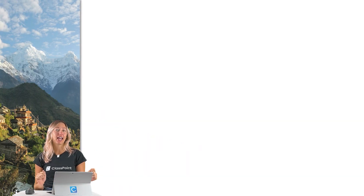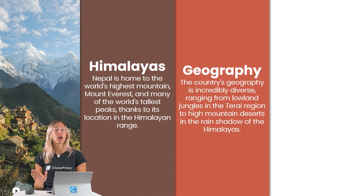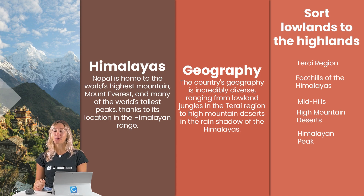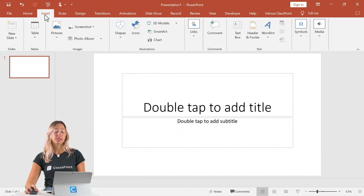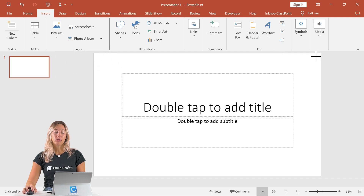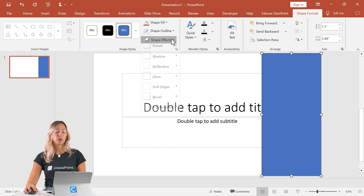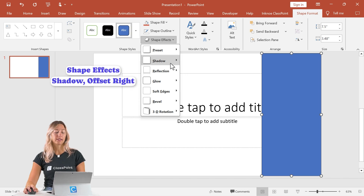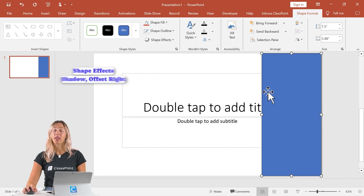First, we have the fly-in animation, great for revealing your content sliding out one after the other. So to make this in your PowerPoint presentation, our first step is to insert a rectangle onto the right side of our slide. From here, we're going to go into our shape effects, go to shadow, and we want offset right.